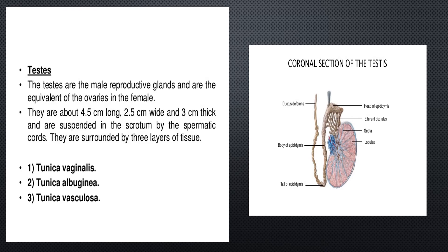The testes are the male reproductive glands, equivalent to the ovaries in females. They are about 4.5 cm long, 2.5 cm wide, and 3 cm thick, and are suspended in the scrotum by the spermatic cords. They are surrounded by three layers of tissue: first, the tunica vaginalis; second, the tunica albuginea; and third, the tunica vasculosa.